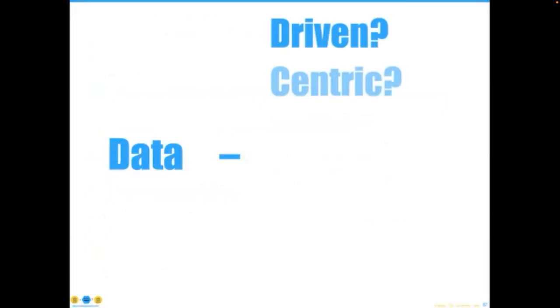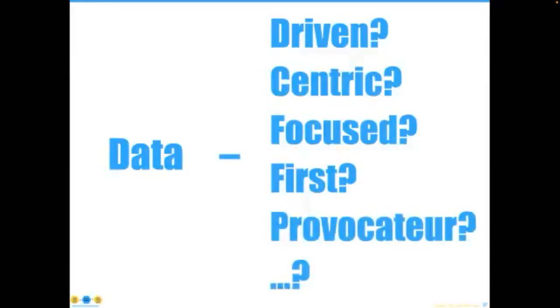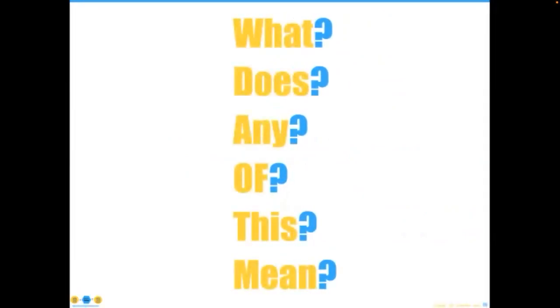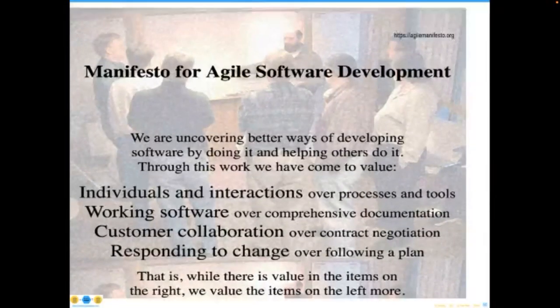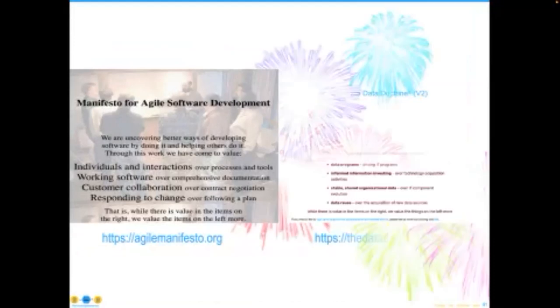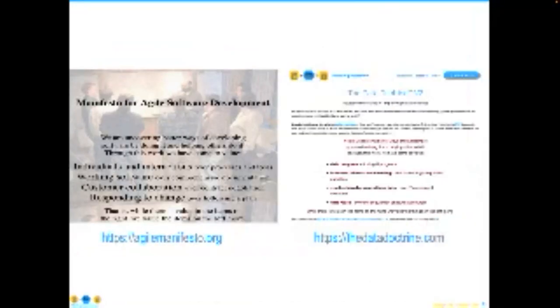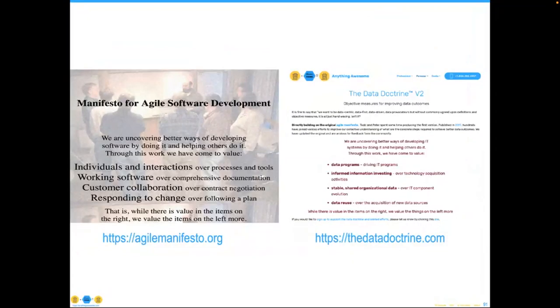The number one deadly sin is not understanding data-centric thinking. We've seen a lot of this over the past 10-20 years: data-driven, data-centric, data-focused — great titles, but what do they really mean? We need to develop some objective characteristics around it. I took inspiration from the Agile Software Manifesto, which has four postulates: individuals and interactions over processes and tools; working software over comprehensive documentation; customer collaboration over contract negotiation; and responding to change over following a plan.